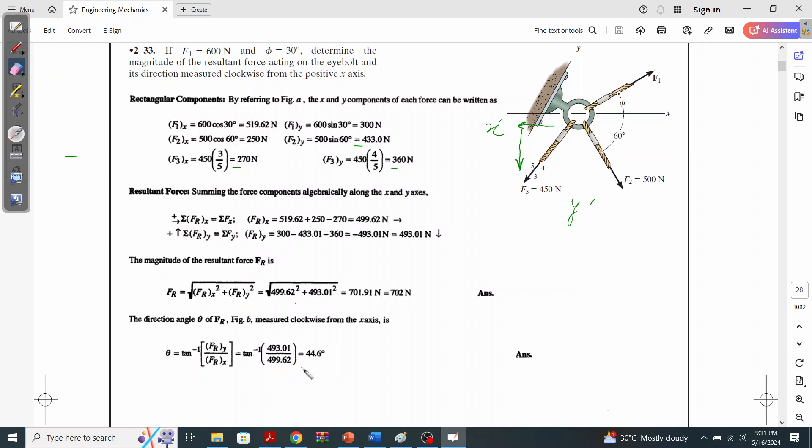But we have to calculate this from the positive x-axis. We know that basically the resultant FRx is calculated as 500 Newtons along the positive x, and FRy is calculated as 493 along negative y. So we'll draw 500 Newtons along the x-axis and we'll draw FRy along the negative y-axis.